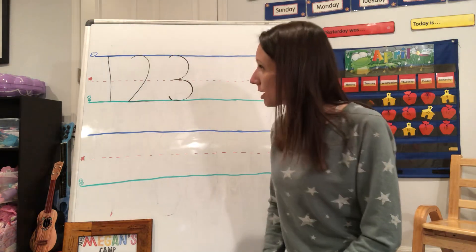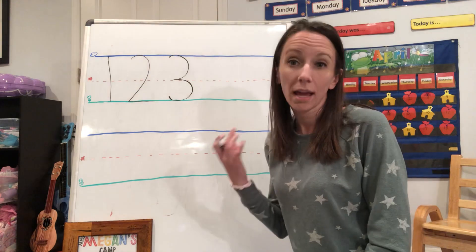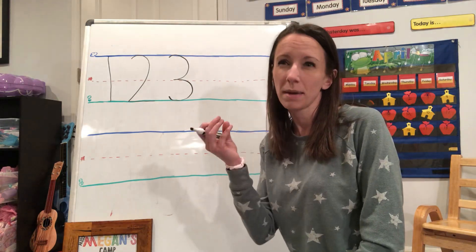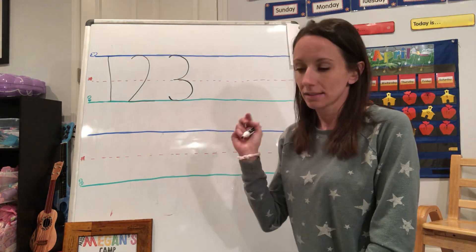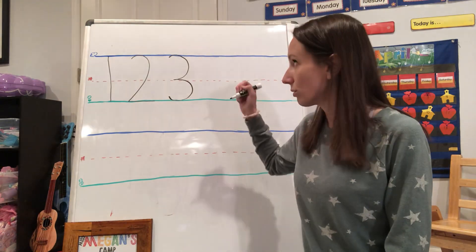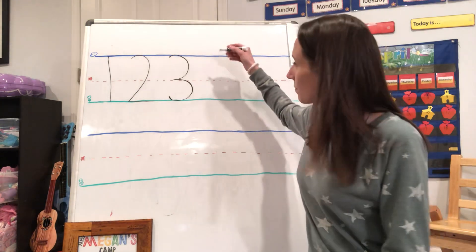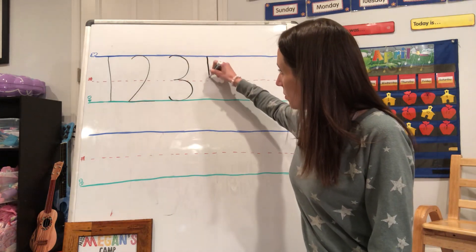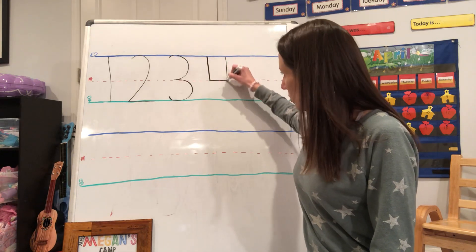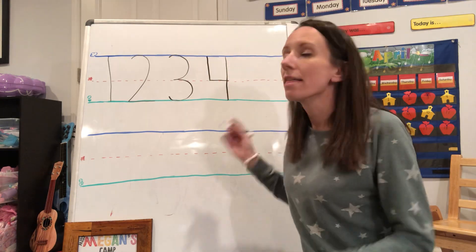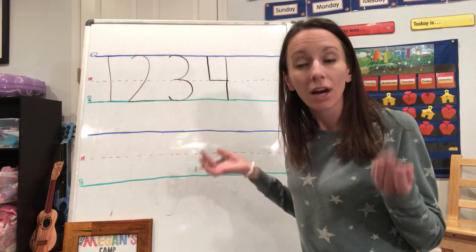Now when we do our number four, I like to add a little emphasis. That means make it sound a little different the second time that I say down. So listen to how I say it. Down and over and down some more, that's the way we make a four.